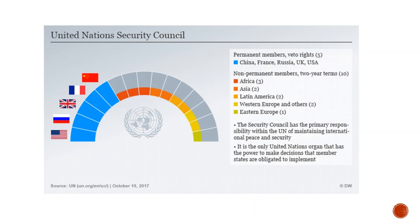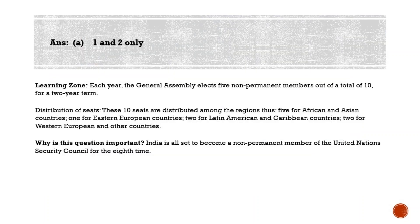Every year the UNGA elects five non-permanent members out of the total 10. These 10 seats are distributed among regions: five seats for African and Asian countries, one for Eastern European countries, two for Latin American and Caribbean countries, and two for Western European and other countries. Of the five seats for Africa and Asia, three are for Africa and two for Asia. There is also an informal understanding to reserve one seat for an Arab country. Recently, India was elected as the nominee for the Asia-Pacific seat.